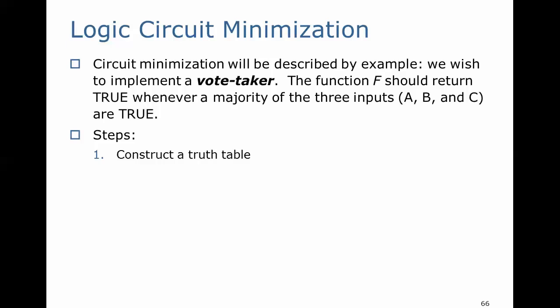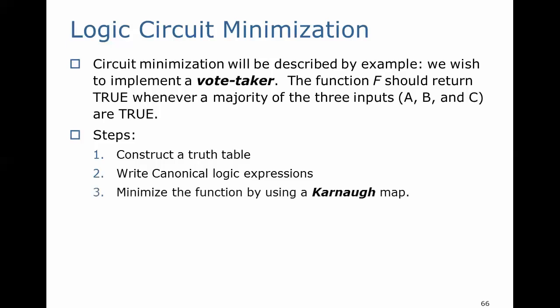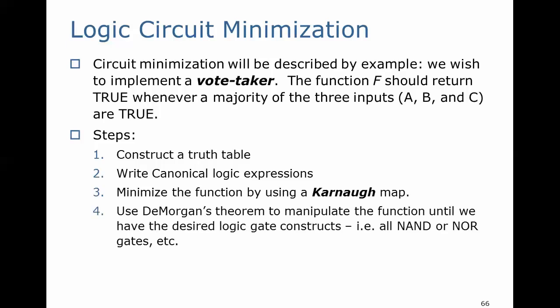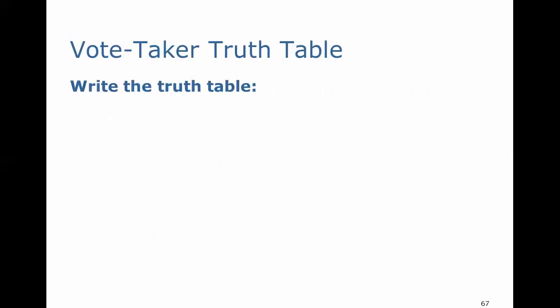Here are the steps. We're going to construct a truth table, write canonical expressions — SOP and POS — minimize the function using a Karnaugh map, and then use De Morgan's theorem to manipulate the function until we have the desired logic gate constructs — in other words, NAND or NOR gates, etc. Finally, we'll implement the function with the logic gates.